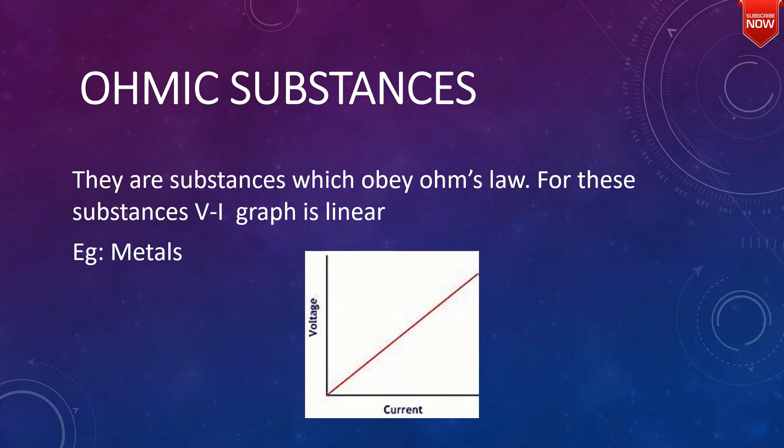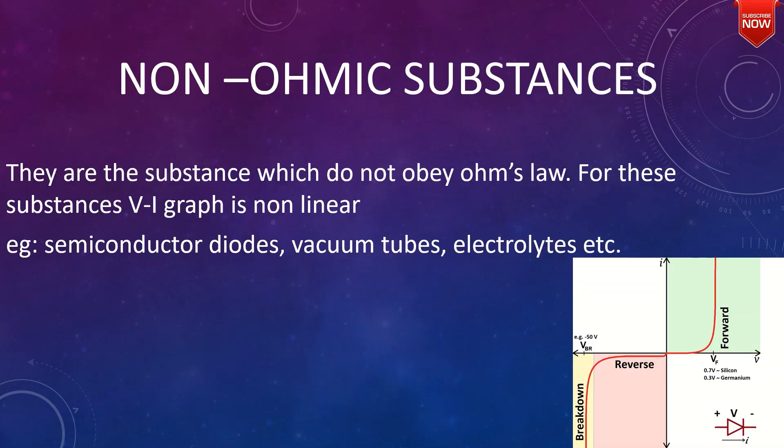There are substances which do not obey Ohm's law. For these substances, the V-I graph is non-linear. These are called non-ohmic substances.